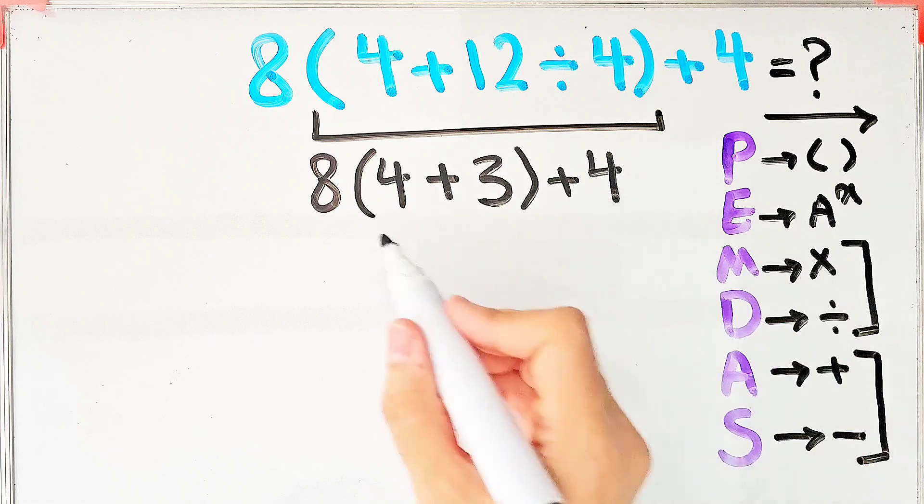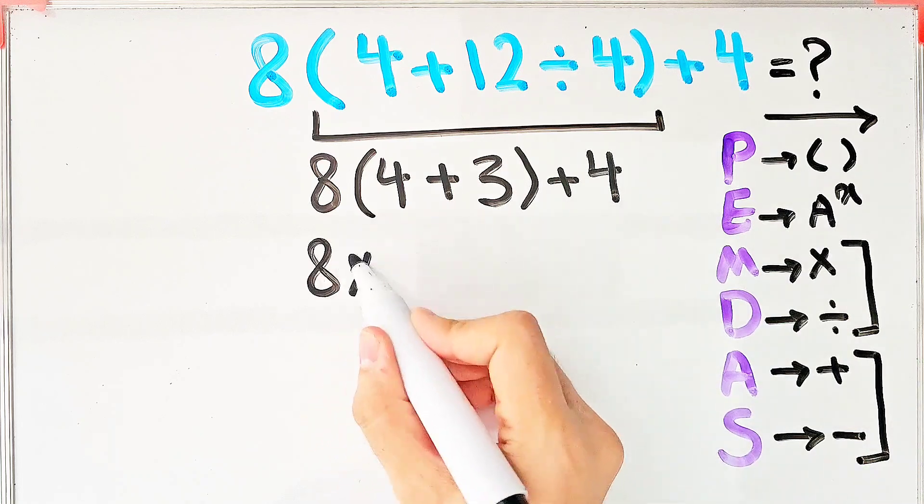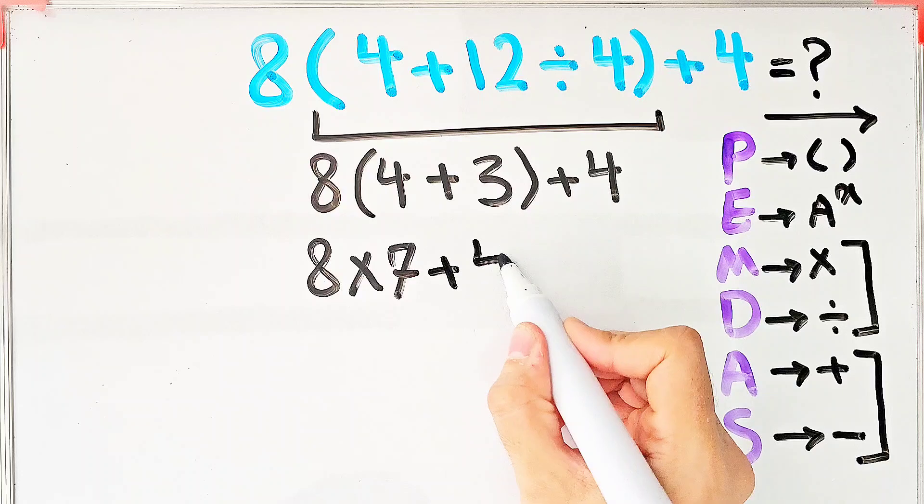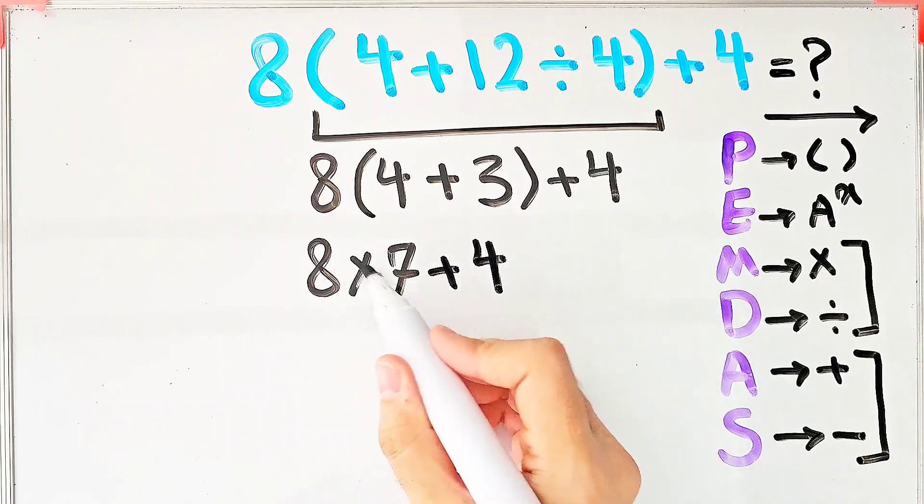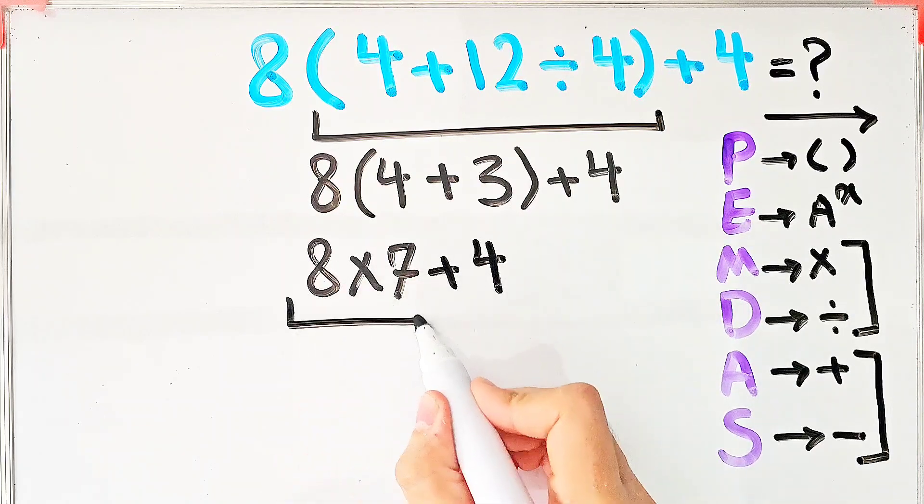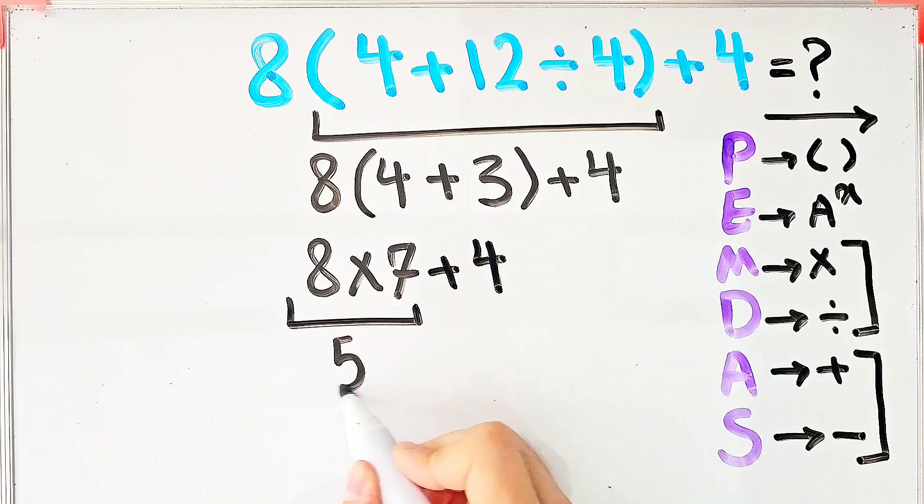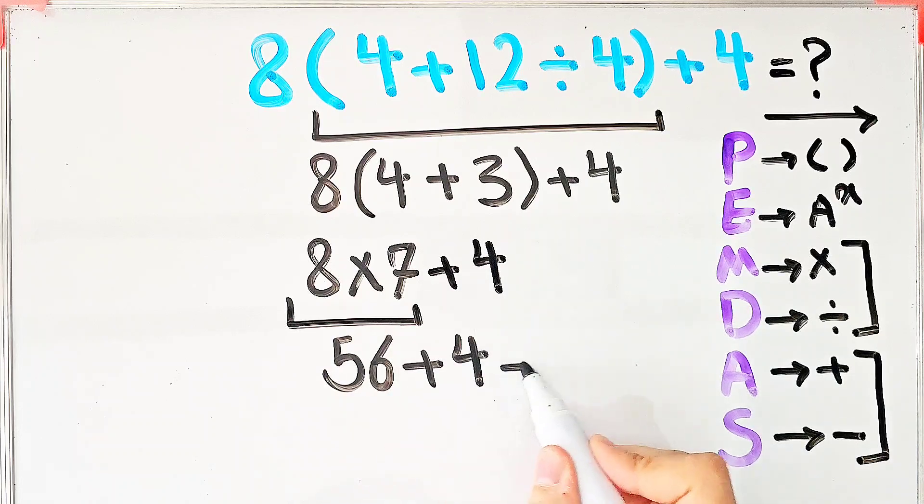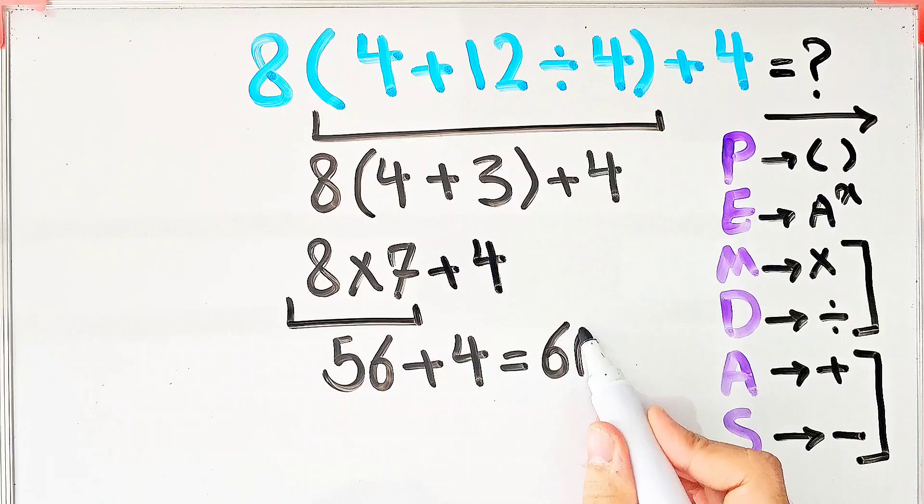Again, we simplify the parenthesis. We have eight times four plus three, that equals seven, then plus four. First, we do this multiplication. Eight times seven equals fifty-six, and fifty-six plus four equals sixty.